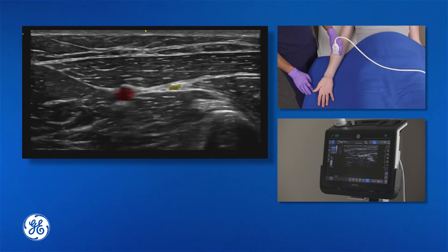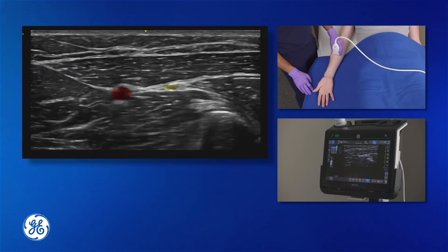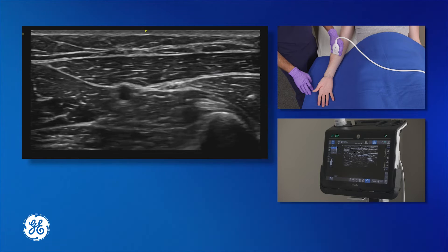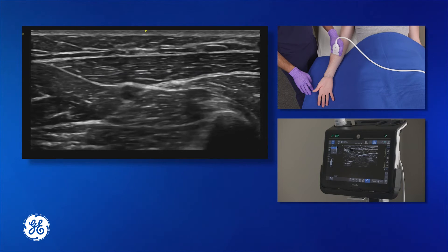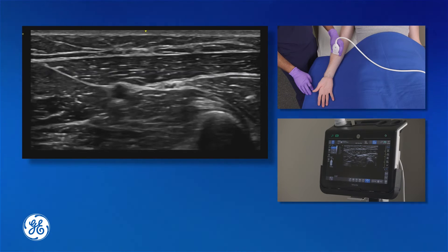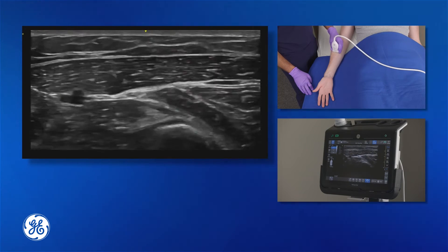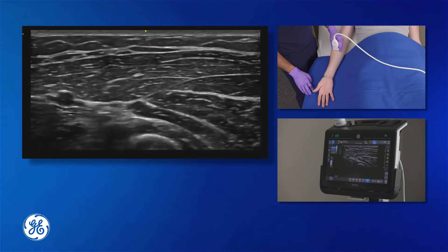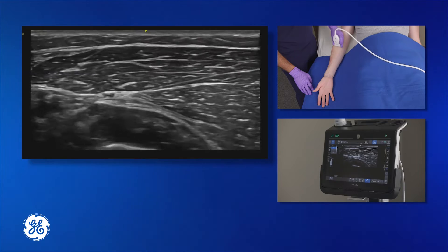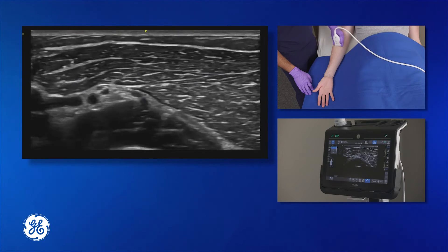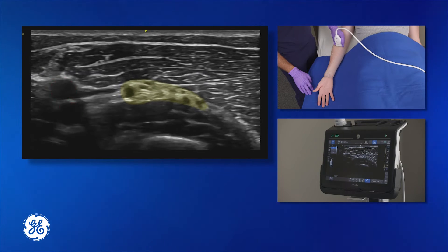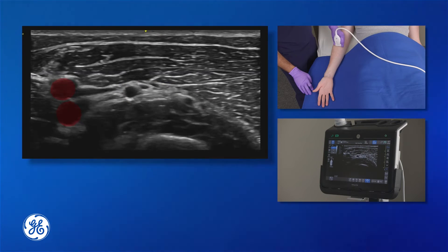We can visualize here that the radial nerve is adjacent to the radial artery, but it's not as easily visualized as it might be more proximally. So I like to carry my scan more proximally, past the mid forearm to near the elbow, to visualize the radial nerve even better. Here you can see an excellent visualization of the radial nerve with the radial artery off to the left of the screen.